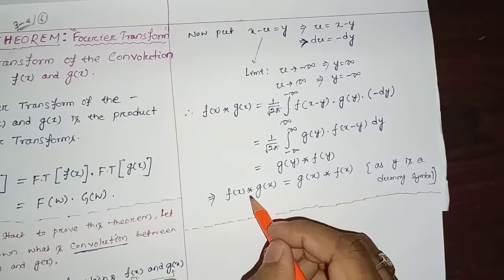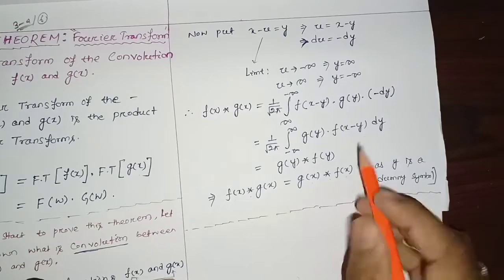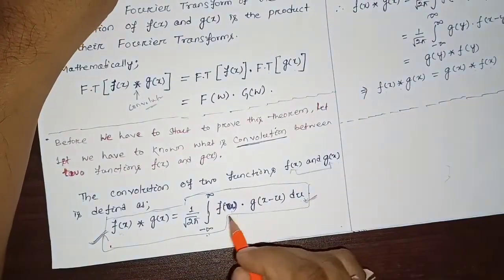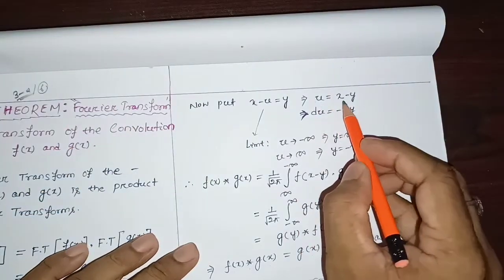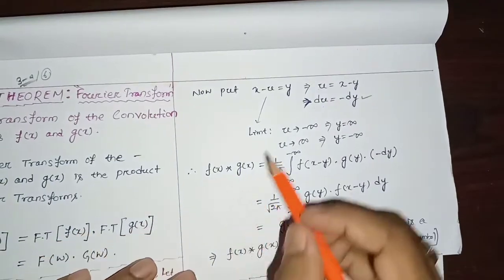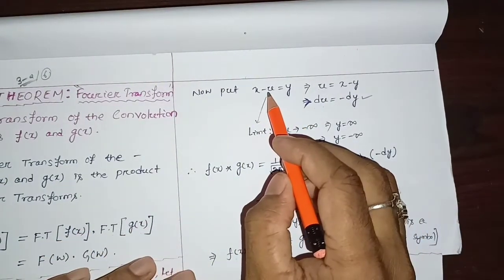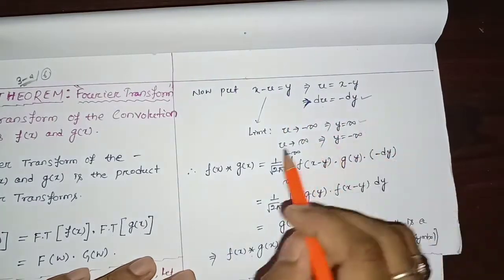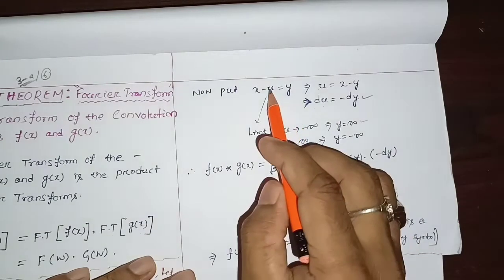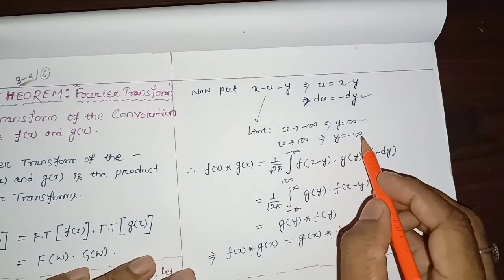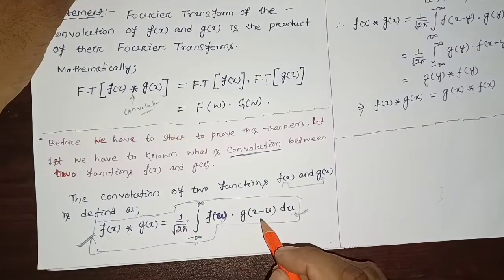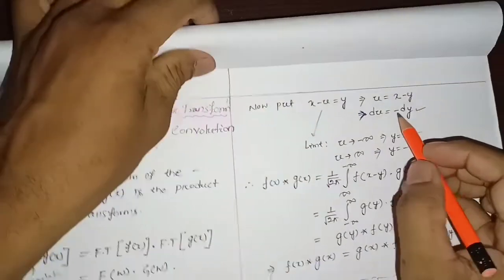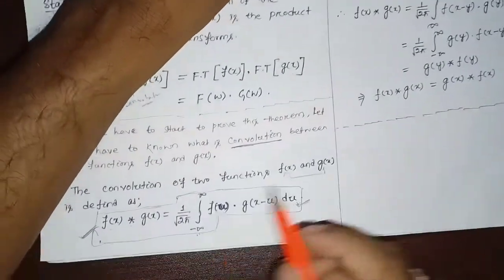A property of convolution is that f(x)*g(x) = g(x)*f(x). To show this, let x−u = y, so u = x−y and du = −dy. Checking the limits: if u = −∞ then y = +∞, and if u = +∞ then y = −∞. Substituting u = x−y and du = −dy into the integral gives limits from +∞ to −∞.